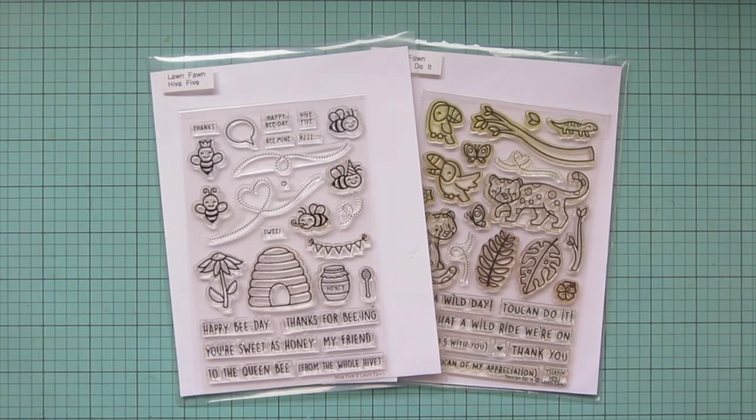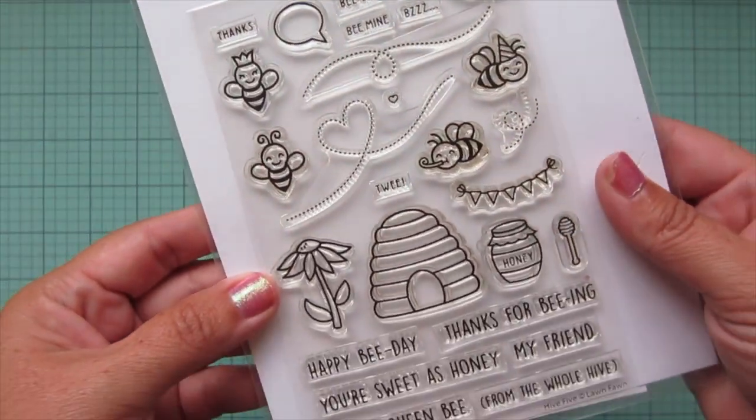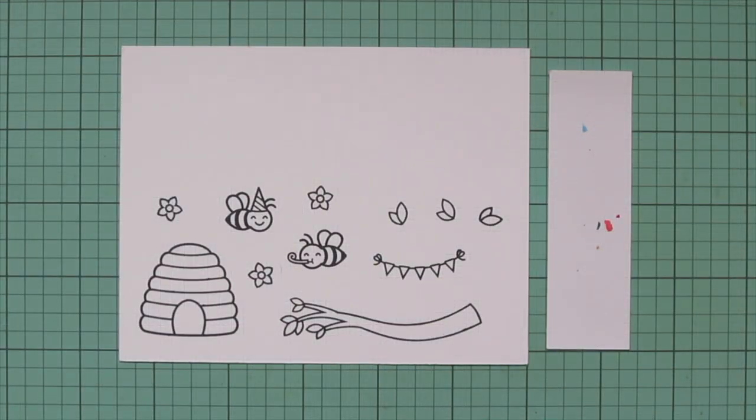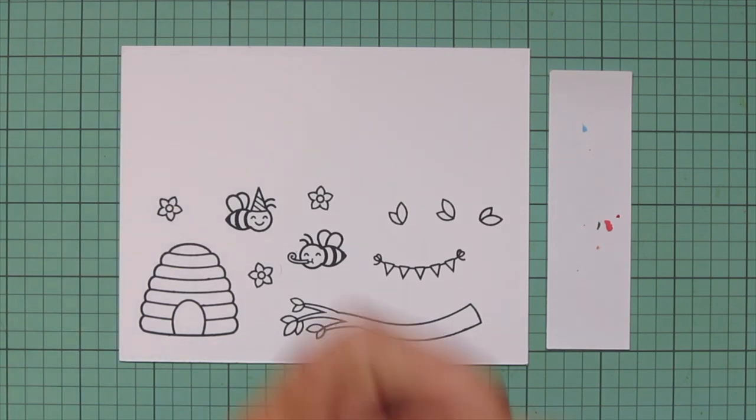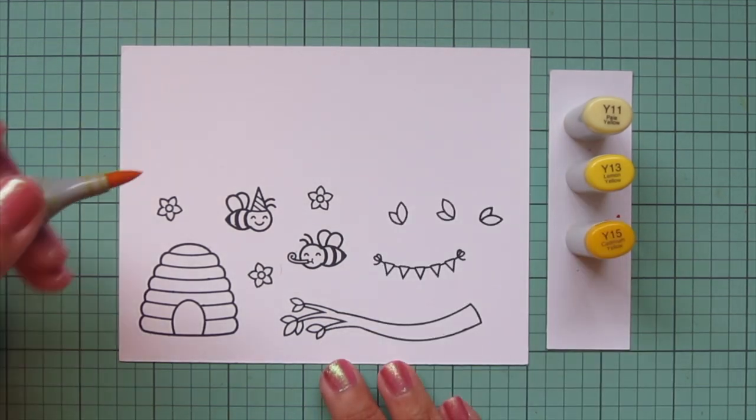Hey friends, it's Christy. Welcome back to my channel. Today I've got a card using Lawn Fawn's Hive Five and Toucan Do It. I've stamped those images out on Spectrum Noir Ultra Smooth Premium White cardstock with Lawn Fawn jet black ink, and I'll be coloring with my Copic markers.